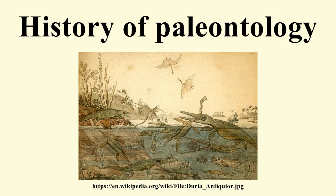In ancient times, Xenophanes, Herodotus, Eratosthenes, and Strabo wrote about fossils of marine organisms indicating that land was once underwater. During the Middle Ages, fossils were discussed by the Persian naturalist Ibn Sina in the Book of Healing, which proposed a theory of petrifying fluids that Albert of Saxony would elaborate on in the 14th century. The Chinese naturalist Shen Kuo would propose a theory of climate change based on evidence from petrified bamboo.